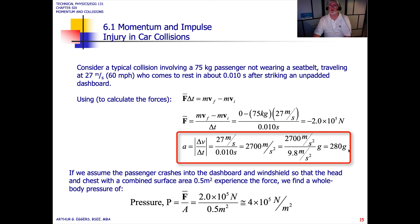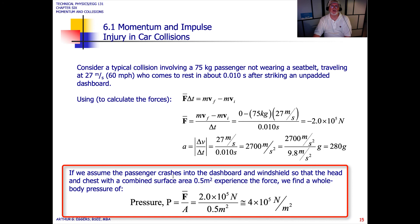This gives us about 280 times the force of gravity. Imagine you sitting in your chair and feeling the force of gravity multiplied by 280 times. If we assume the passenger crashes into the dashboard and the windshield so that his head and chest with a combined surface area of a half a meter squared experience the force, we find the whole body pressure defined as average force divided by the area approximately equal to 4 times 10 to the fifth newtons per meter squared.